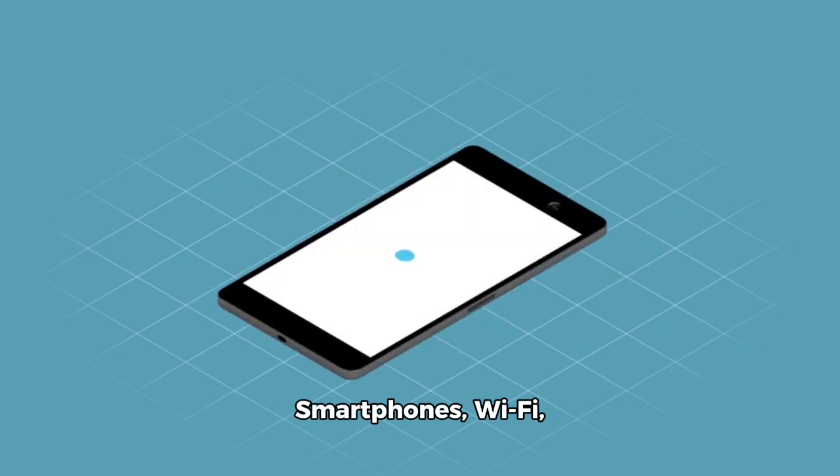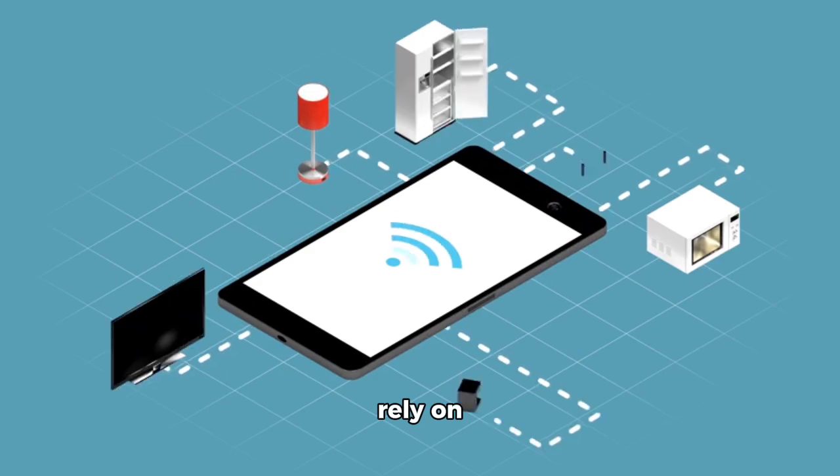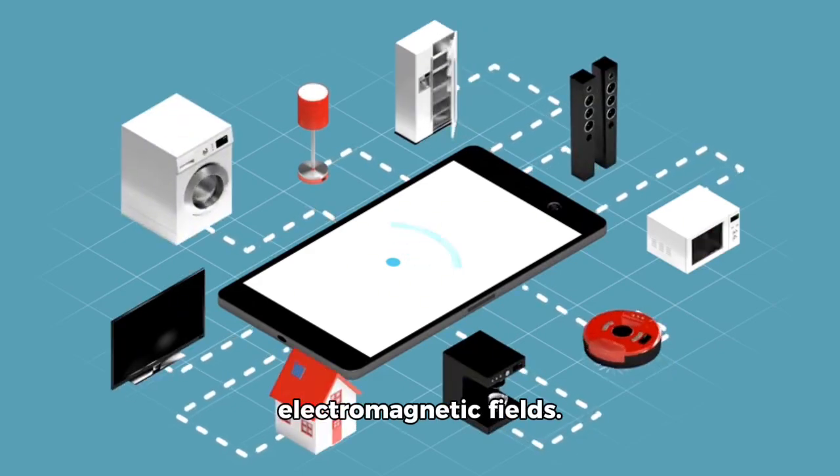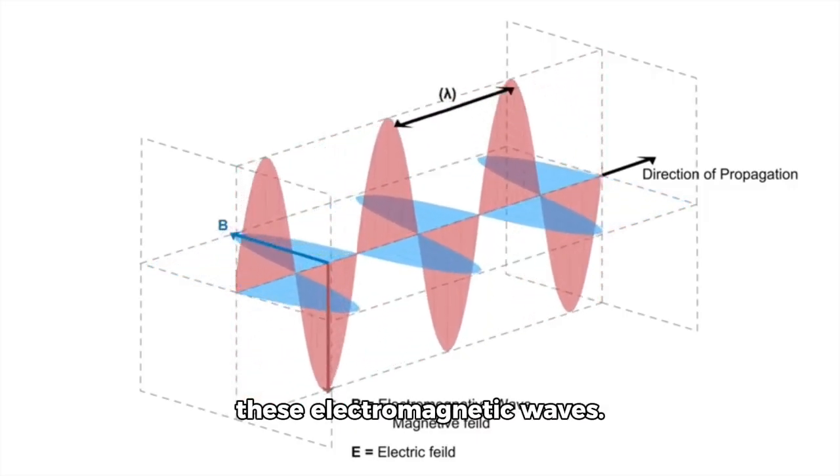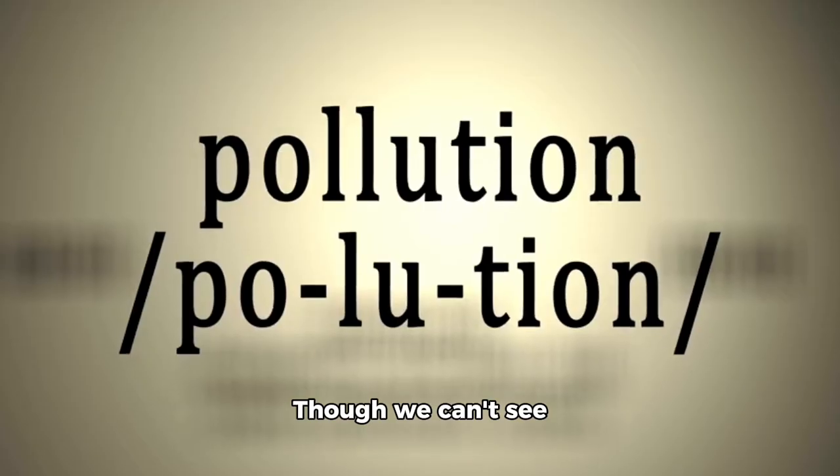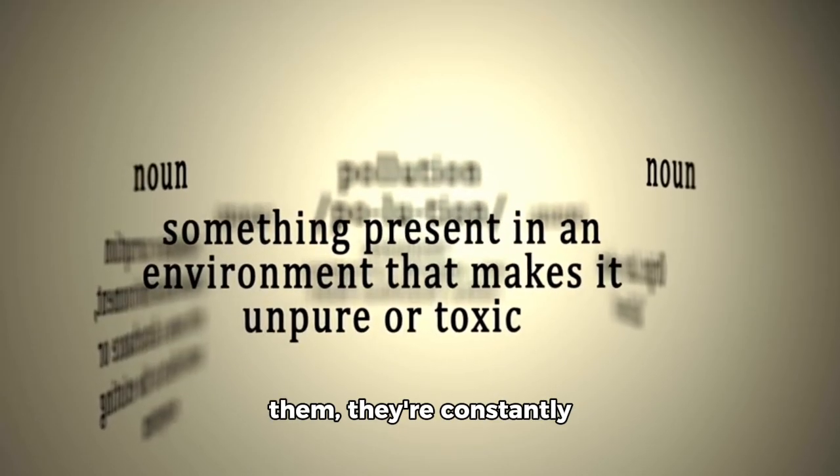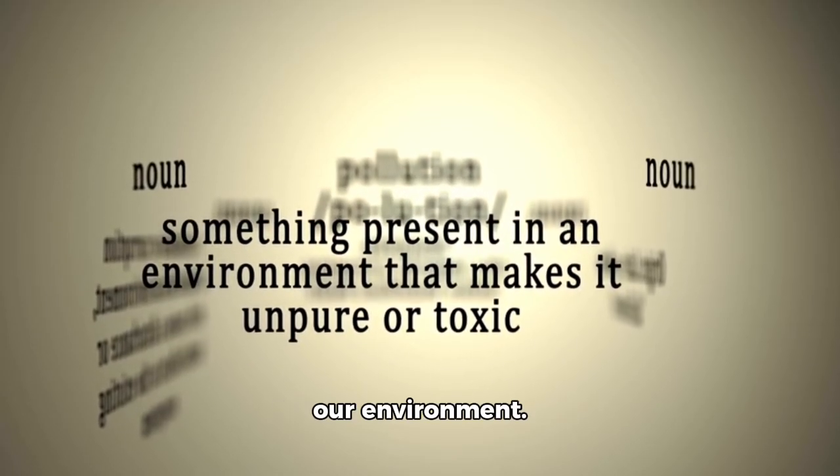Smartphones, Wi-Fi, GPS, even the electricity that powers our homes all rely on electromagnetic fields. The air around us is filled with these electromagnetic waves. Though we can't see them, they're constantly interacting with us and our environment.